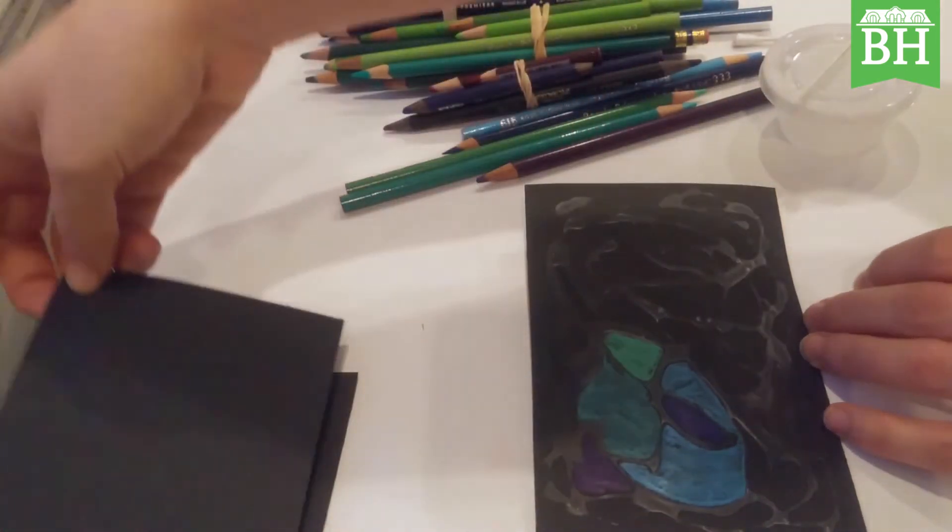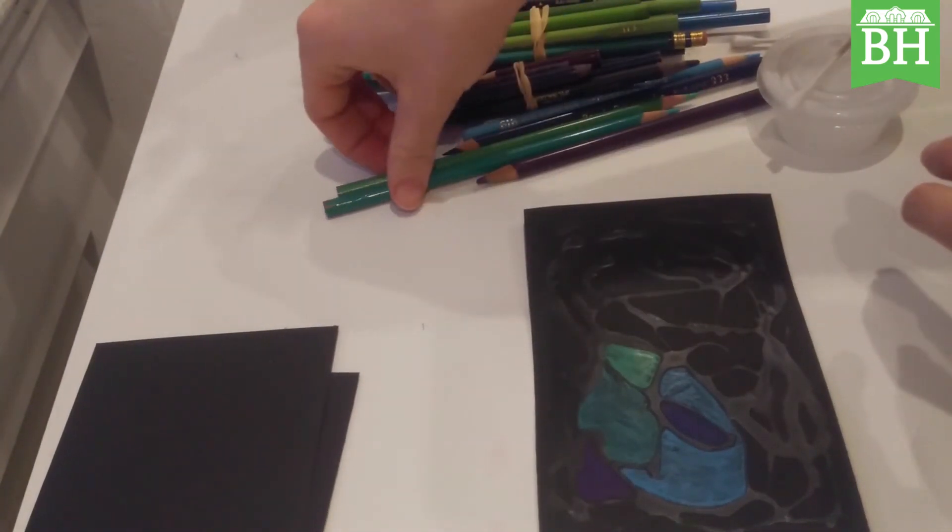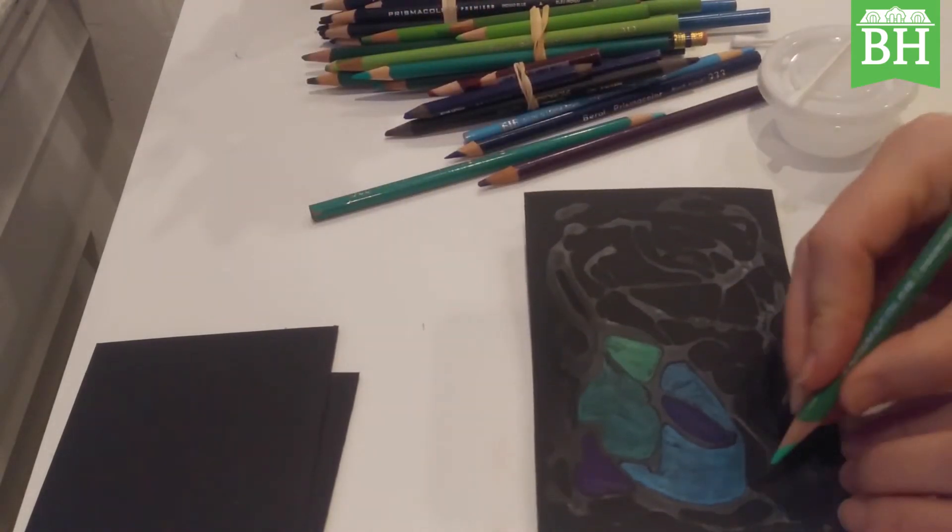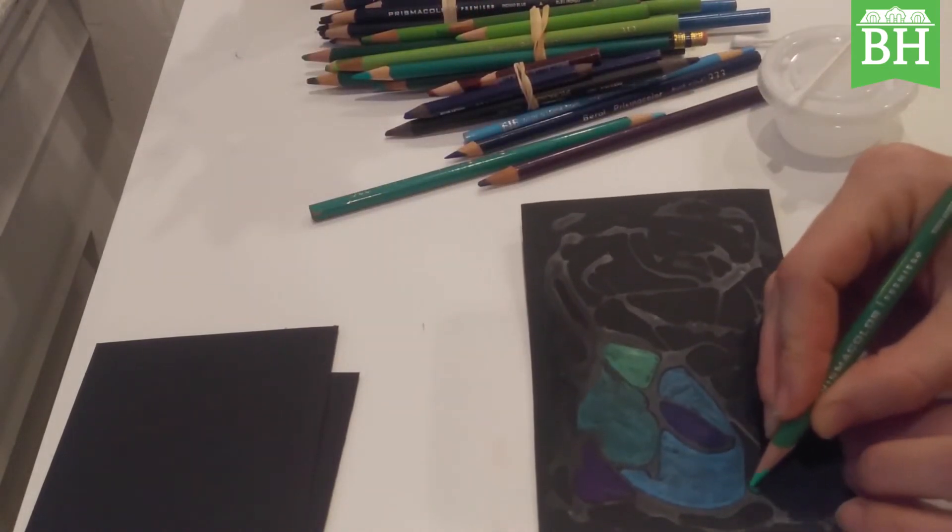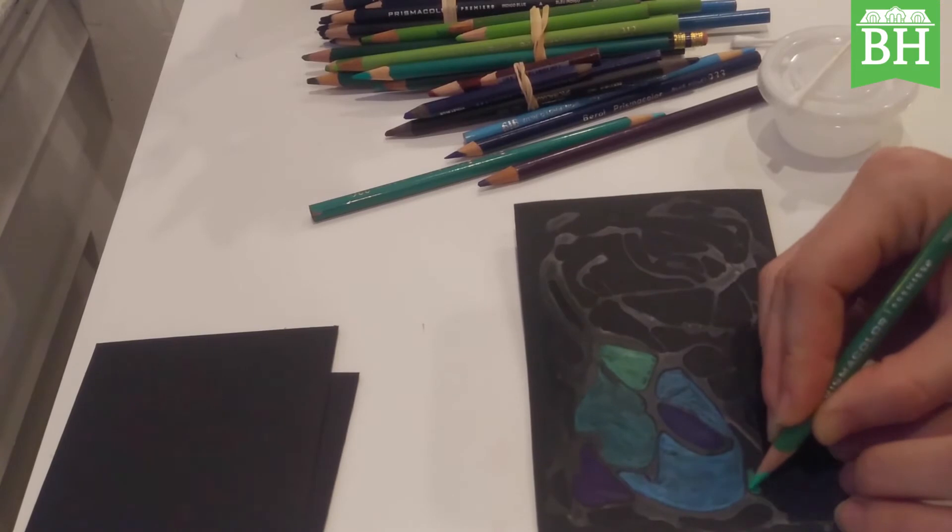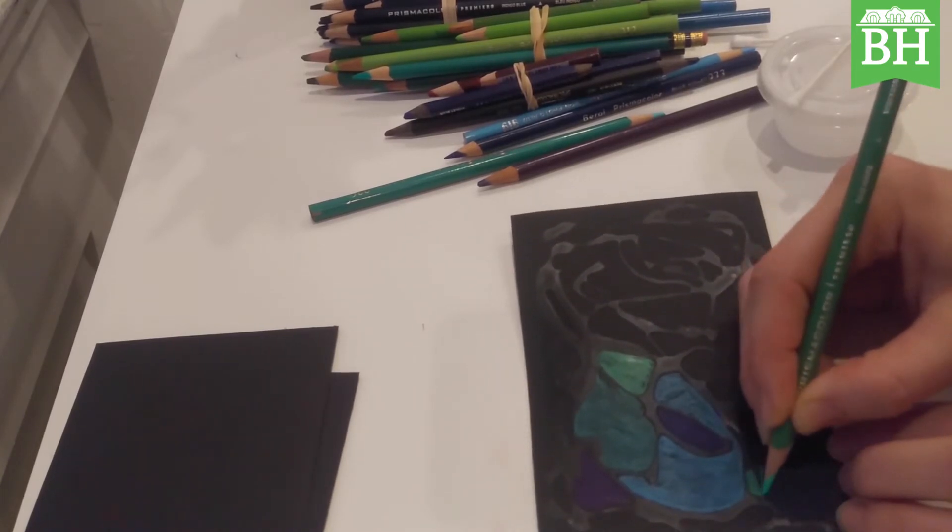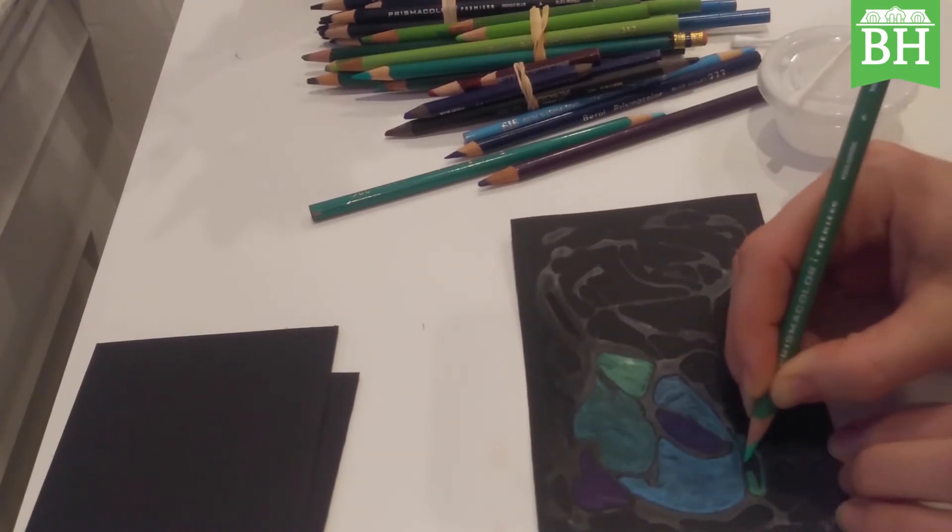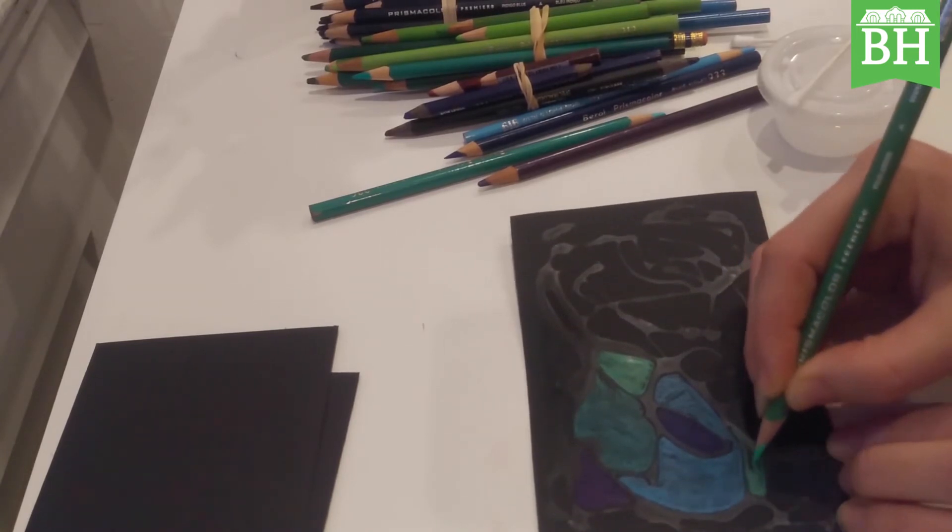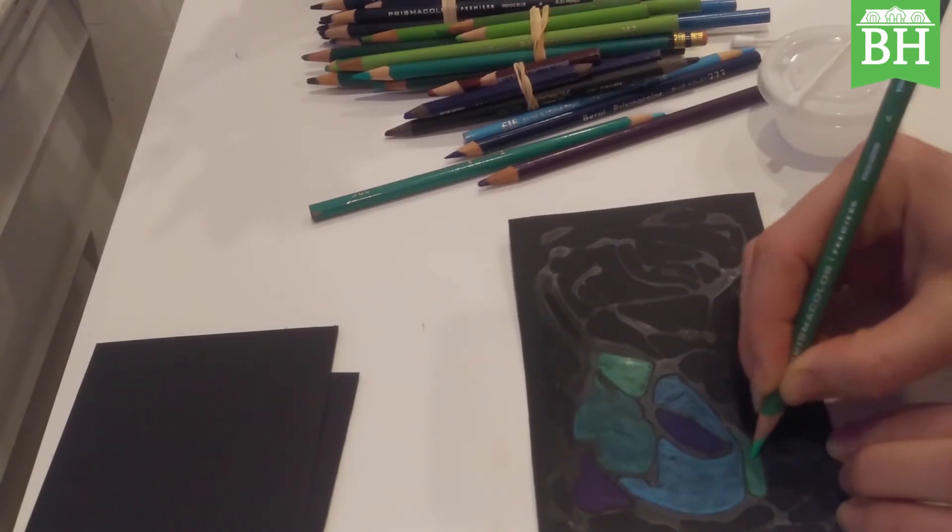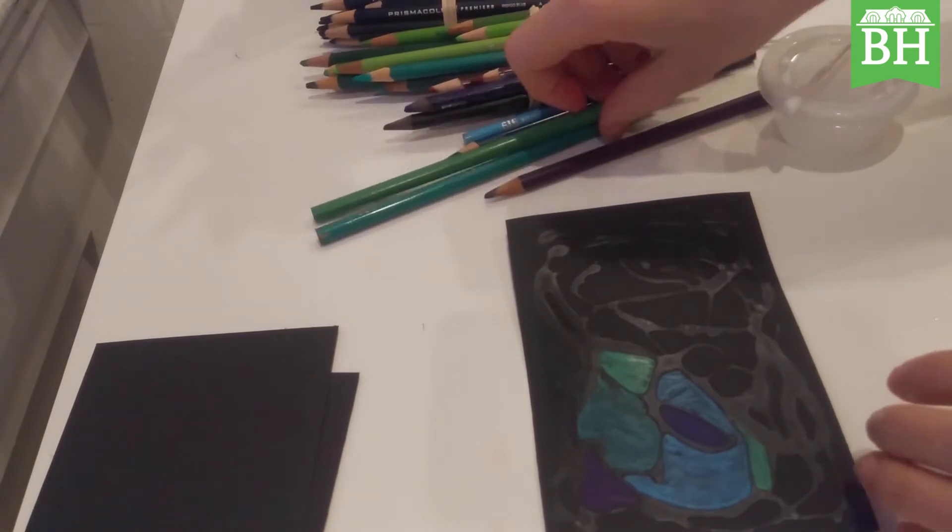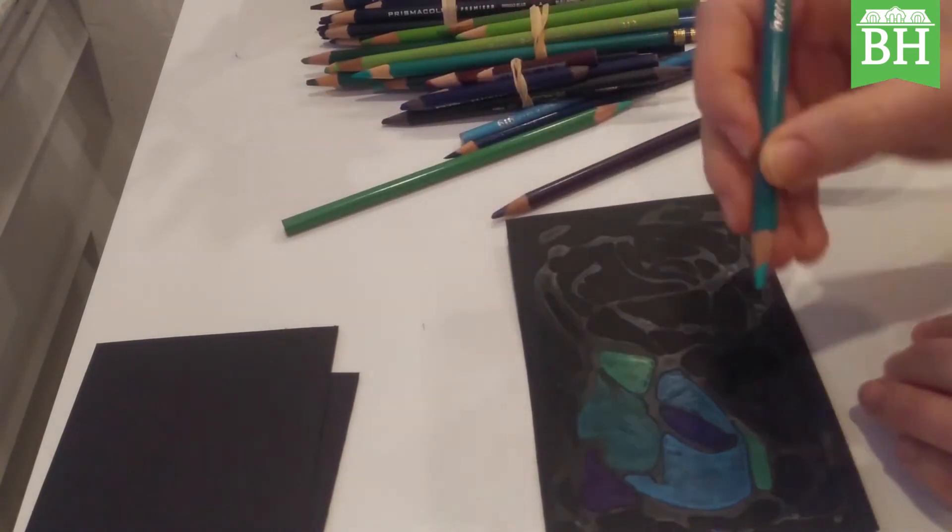The second part is that you're going to take your colored pencil and you're going to draw in those shapes. I like to outline mine first and then I try to keep my pencil lines going the same direction. I like to use brighter colors because they tend to show up more.